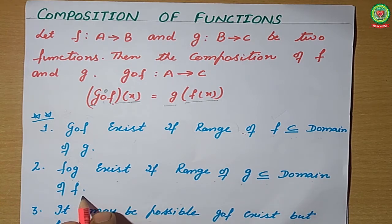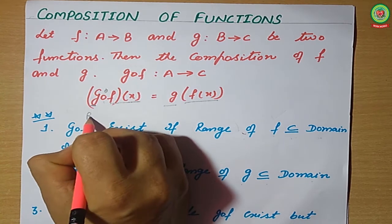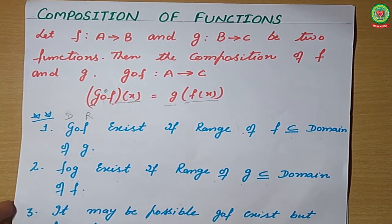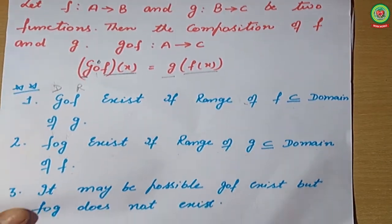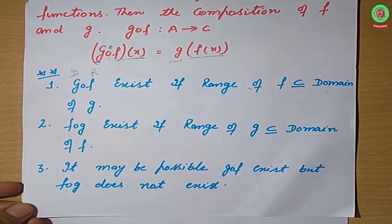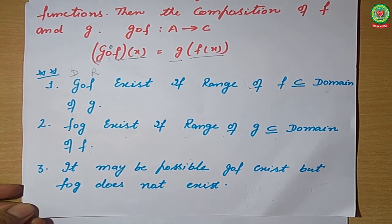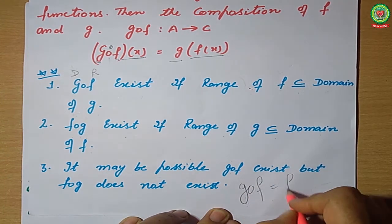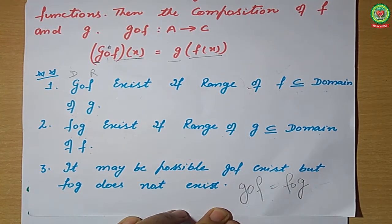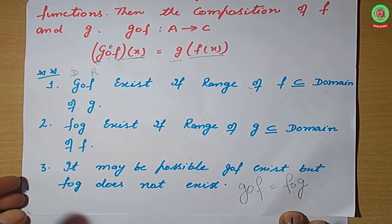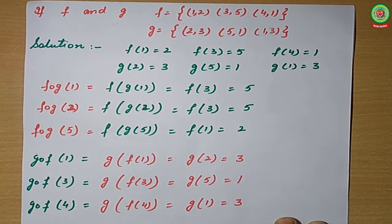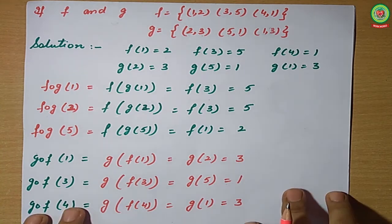gof exists if the range of f is a subset of the domain of g. It may be possible that gof exists but fog does not exist. One more condition: gof and fog may or may not be equal. Now I am taking one example from which we will first find out whether fog and gof are possible or not.